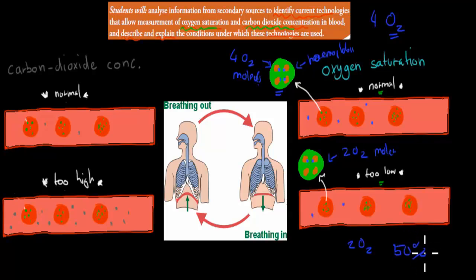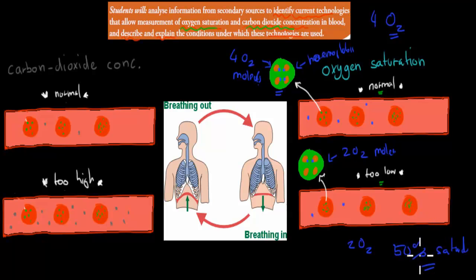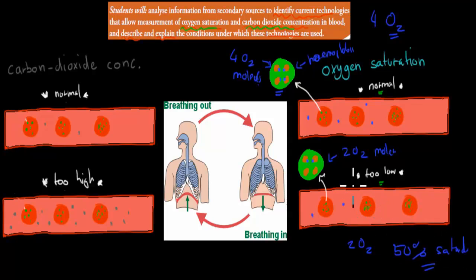So here we have 50% saturation — 50% of our normal levels. This would obviously be really bad; this would be pretty much death, because remember what needs oxygen? Our cells need oxygen to live, to produce ATP. So in this case we would be dead if we have such low saturation in terms of oxygen. That's why we want to have a technology to be able to measure it, to make sure we're healthy.